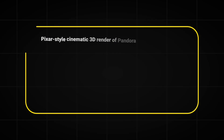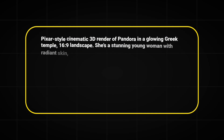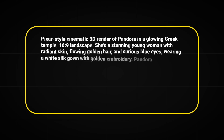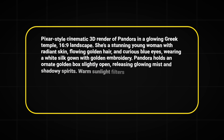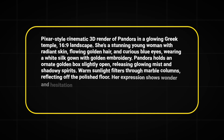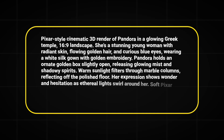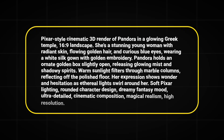And this is what it gave me: Pixar-style cinematic 3D render of Pandora in a glowing Greek temple, 16x9 landscape. She's a stunning young woman with radiant skin, flowing golden hair, and curious blue eyes, wearing a white silk gown with golden embroidery. Pandora holds an ornate golden box slightly open, releasing glowing mist and shadowy spirits. Warm sunlight filters through marble columns, reflecting off the polished floor. Her expression shows wonder and hesitation as ethereal lights swirl around her. Soft Pixar lighting, rounded character design, dreamy fantasy mood, ultra-detailed cinematic composition, magical realism, high resolution.